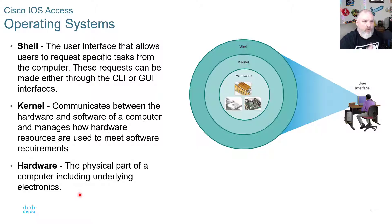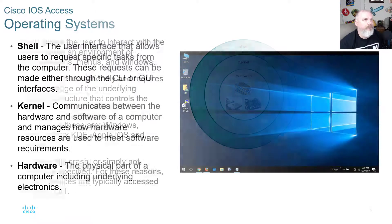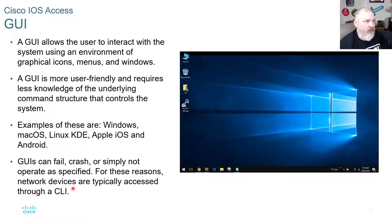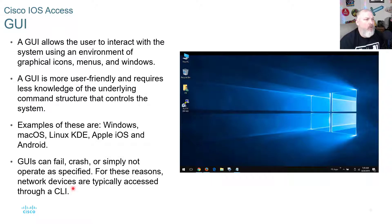A router or switch has a motherboard, memory, and a processor — just like a regular computer — but it works a little differently. The GUI, or graphical user interface, allows a user to interact with the system using an environment with icons, menus, and windows. Back in the day, systems like Windows 3.1 running with DOS 6.22 were command-line based — that was the disk operating system.